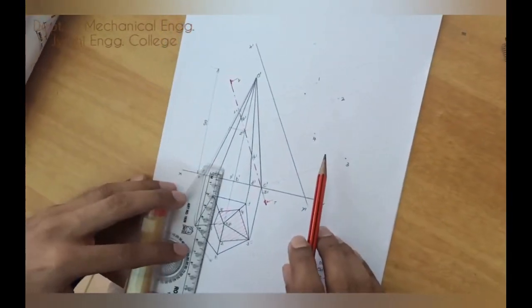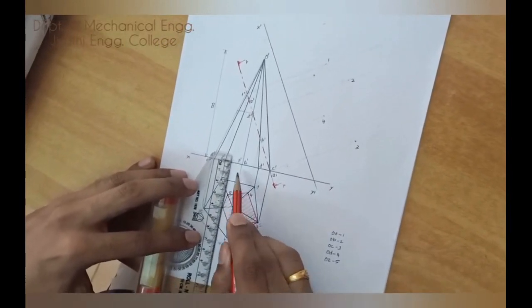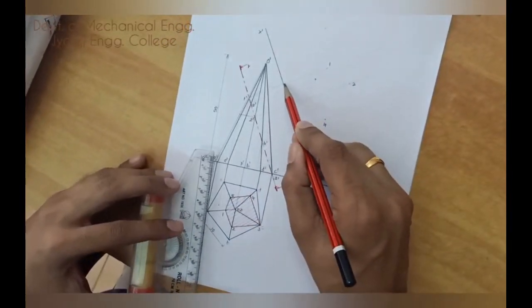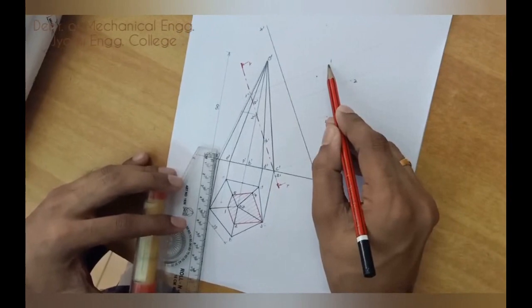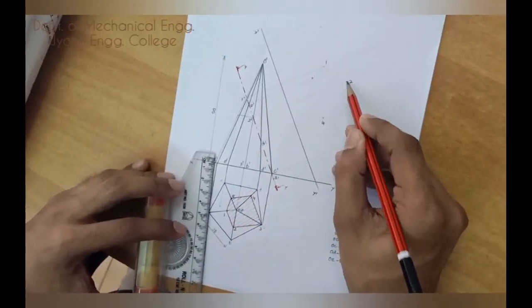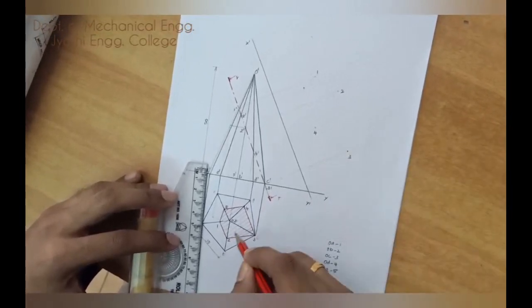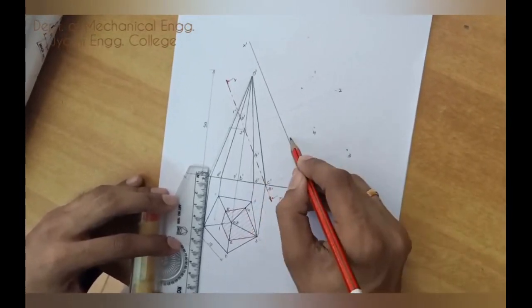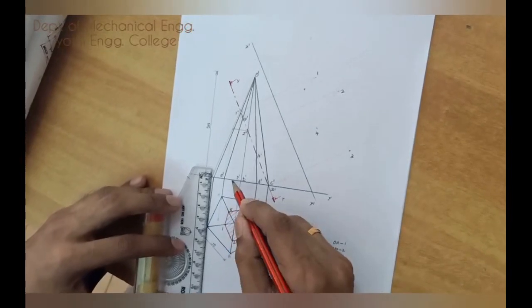Now measure the distance from the point 1 to the XY line and mark correspondingly along the projection line of 1. Similarly, 2, this is 2, 3, this is 3, measure the distance from 4 and 4, and last one 5.